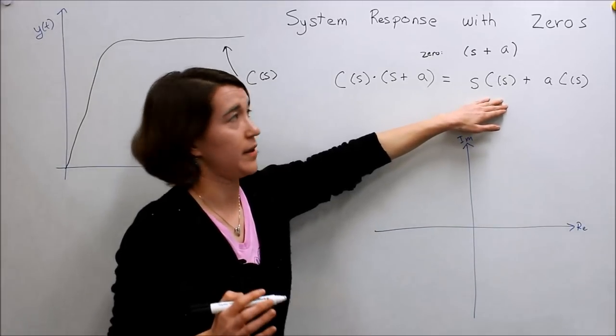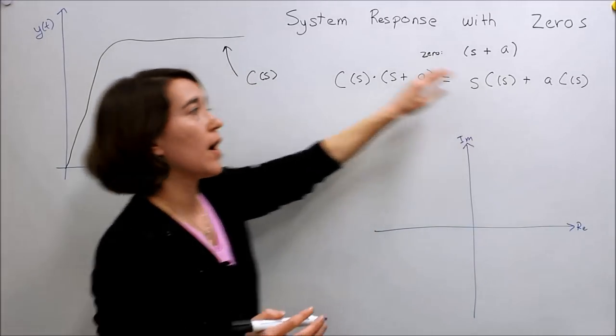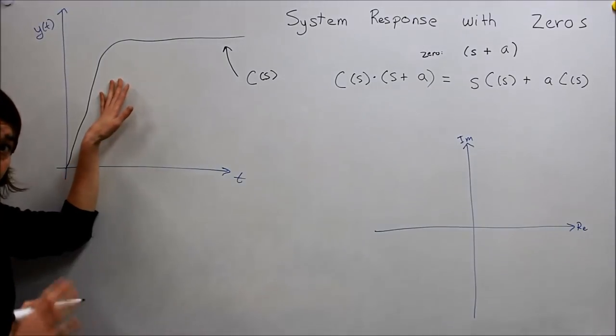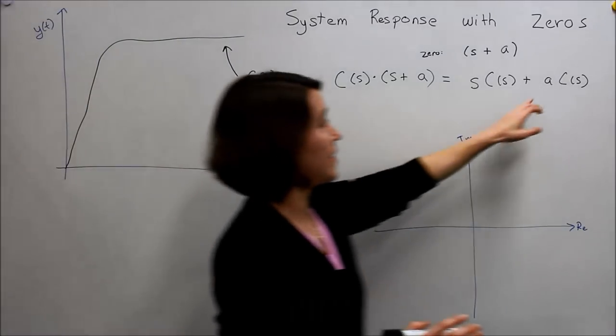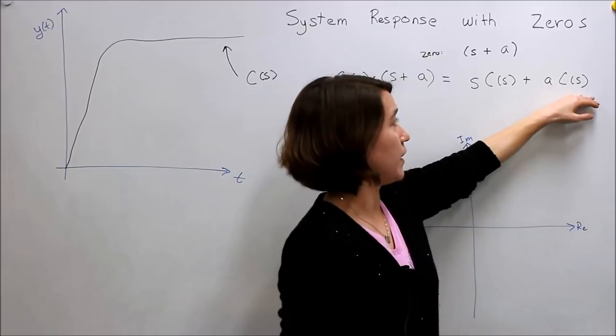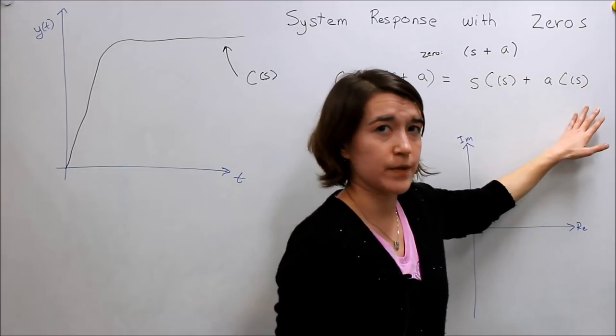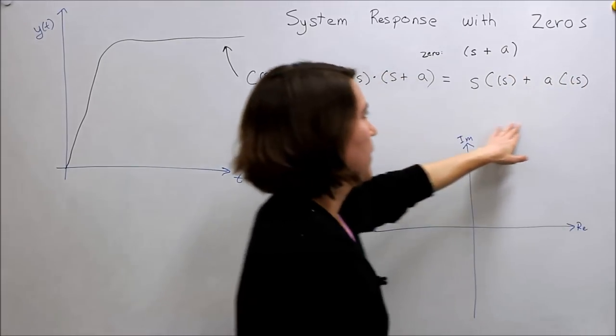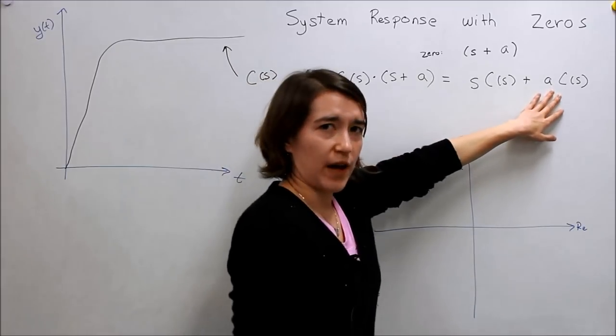This, in short, is the derivative of the response that we already know. And this is a scaled version of the existing response. So we have to know a little bit about these values and how they relate.